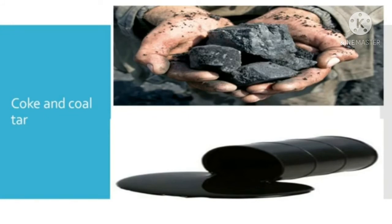Coke contains 98% carbon. Coke is porous, black and the purest form of carbon. It is a good fuel and burns without smoke. It is largely used as a reducing agent in the extraction of metals from their ores. Coke is also used in making fuel gases like coal gas and water gas, which is a mixture of carbon monoxide and hydrogen.